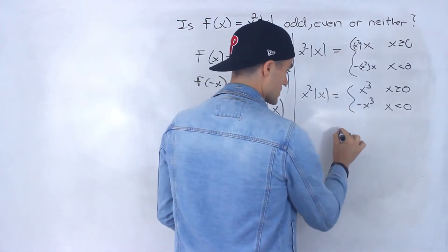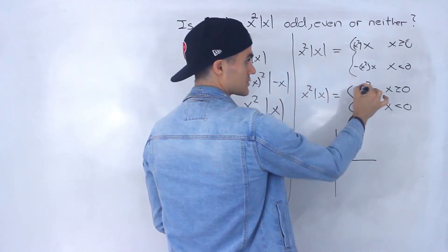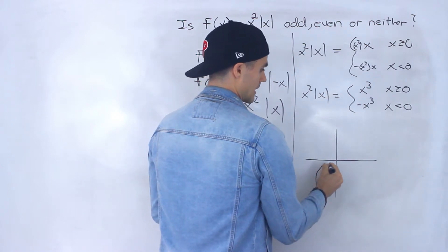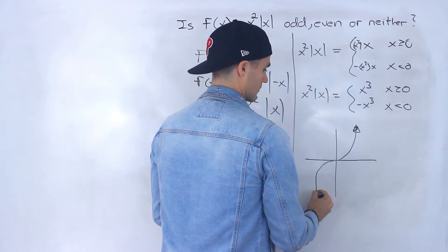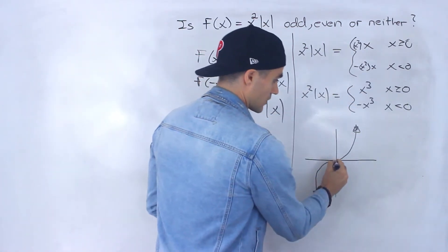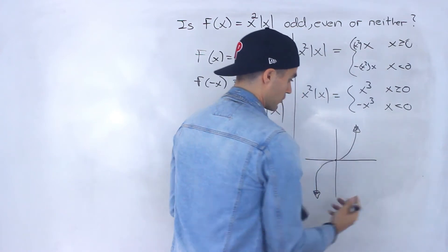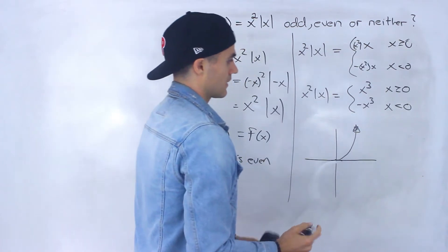So if we graph this, first off, how does x to the power of three look? Let's just look at this piece here. It looks like that, but notice it's x to the power of three when x is greater than or equal to zero. So only that portion. So this portion we would ignore.